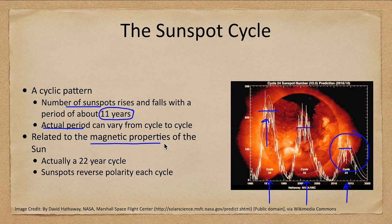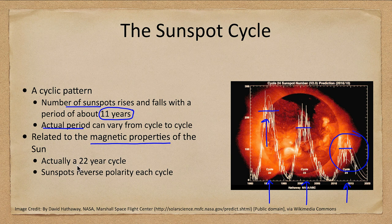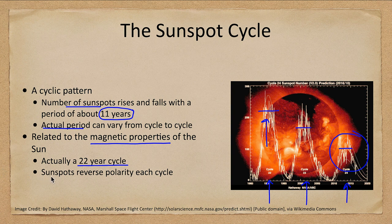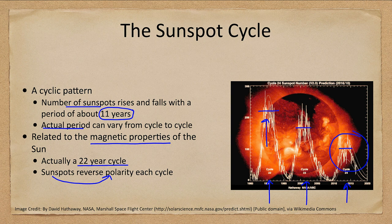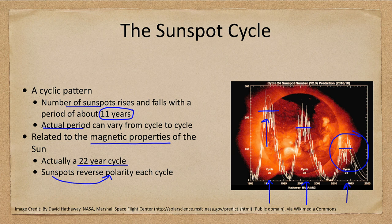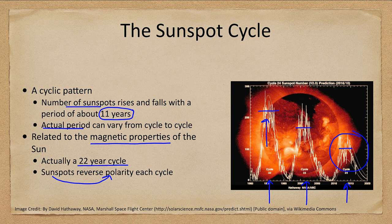This is actually related to the magnetic properties of the Sun. It's really a 22 year cycle because at the end of each cycle the sunspots will reverse their polarity, which means that north becomes south and south becomes north in terms of the magnetic field. That does not affect the rotational axis of the Sun, but its magnetic field will flip, making the complete cycle 22 years long.